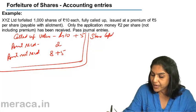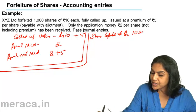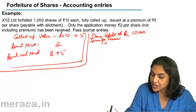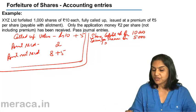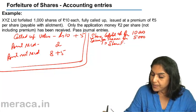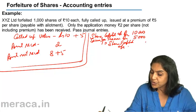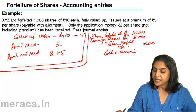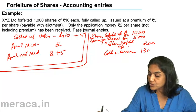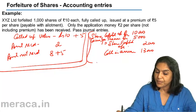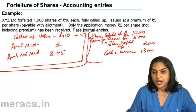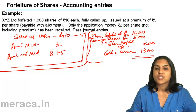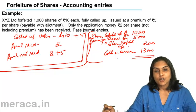The entry for forfeiture: Share Capital Account debit with the paid-up value — 1,000 into 10 = 10,000. Securities Premium Account debit — since it has not been paid, we also write back the securities premium: 5 per share into 1,000 shares = 5,000. To Shares Forfeited Account with the amount actually received: only 2 rupees into 1,000 shares = 2,000. To Calls in Arrears: 13,000 — this includes the share premium. So share capital debit 10, securities premium debit 5, to shares forfeited 2, to calls in arrears 13, since calls in arrears is inclusive of the share premium and securities premium has been separately debited.